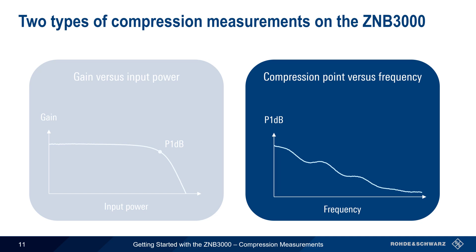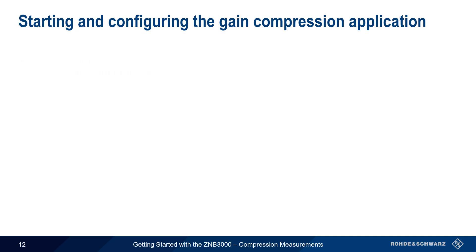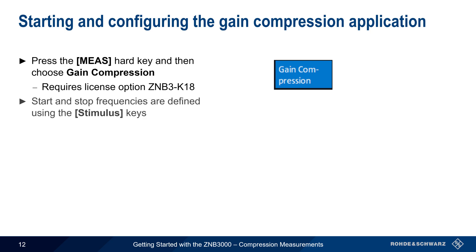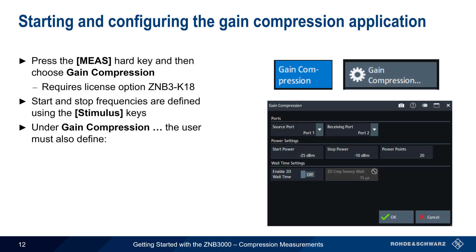Now let's look at the other type of compression measurement supported on the ZMB3000: compression point as a function of frequency, sometimes also referred to as a 2D or two-dimensional gain compression measurement. To start this type of measurement, first press the Measure hard key and then choose Gain Compression from the list of available applications. Note that this application requires the ZMB3K18 license key. The first step is to configure the Start and Stop frequencies using the Stimulus menu. Next, under Gain Compression, additional measurement parameters must be defined, including the source and receiving port.